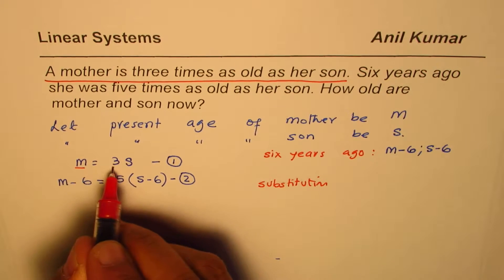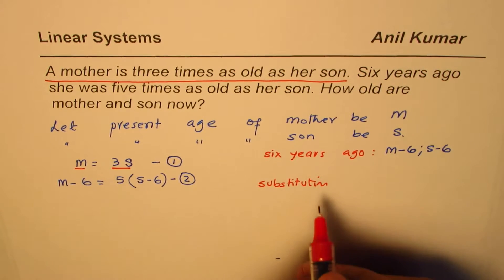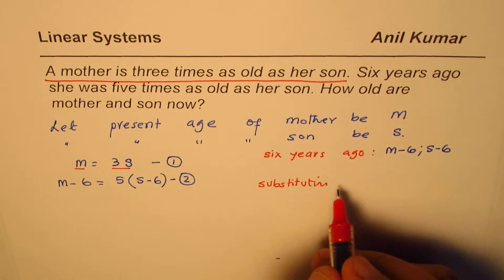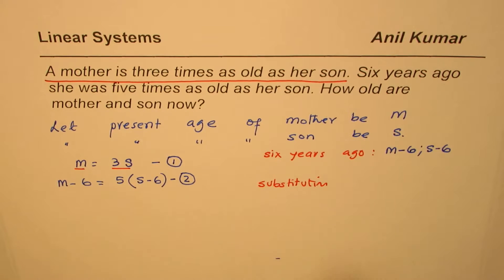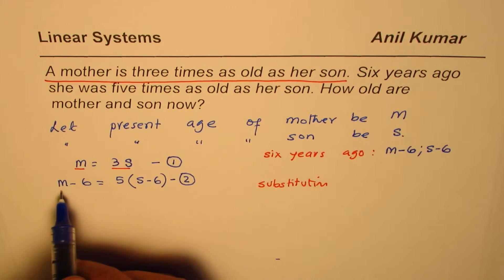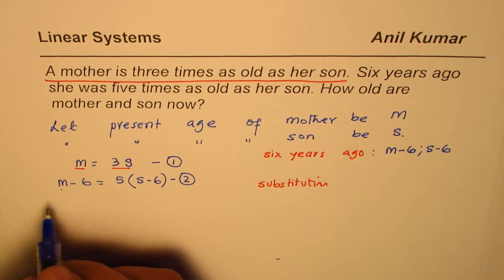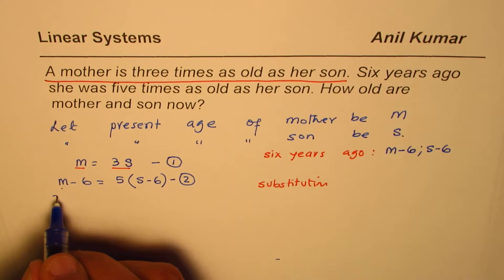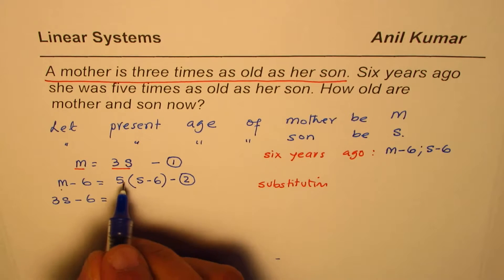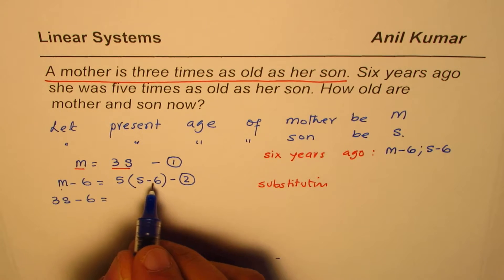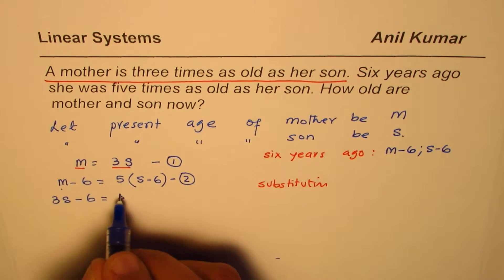We know mother is three times son's age. So we'll substitute equation one into equation two — instead of m, we'll write 3s. So we have three s minus six equals five times s minus six.